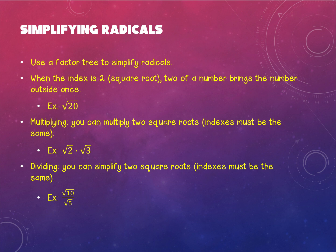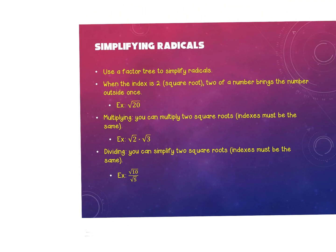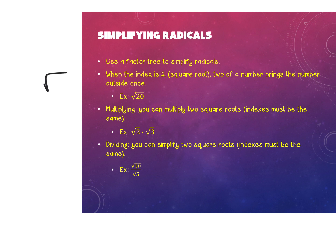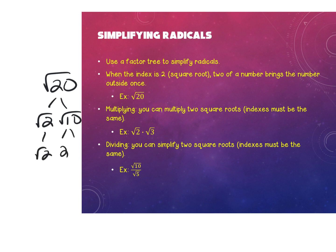Whenever your index is a 2, it's going to be a square root. You're looking for two numbers that multiply to give you that number. For example, if I have 20 and do a factor tree, it doesn't matter whether you start with 2 times 10 or 4 times 5 — keep breaking the 20 down until it's prime. If I start with 2 times 10, the 2 is prime but 10 is not, so break it down one more time. Now that I have all prime factors, I look for pairs. I have a pair of 2s — a 2 comes out because the pair creates a perfect square, and anything that doesn't pair up stays under the radical. Leave all answers in simplest radical form.